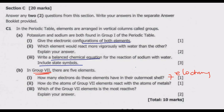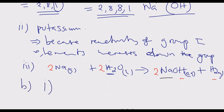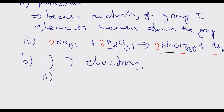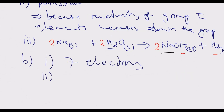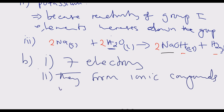Roman numeral 2: how do the atoms of group 7 elements react with the atoms of metals? Group 7 elements form ionic compounds with metals. That is how they react — by forming ionic compounds.